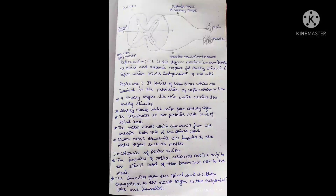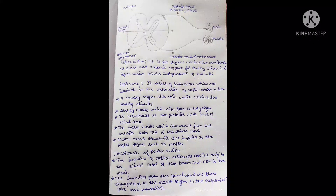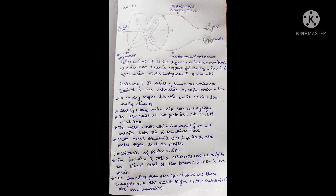Next, a sensory organ like skin which receives the sensory stimuli. And sensory nerve which arises from the sensory organ.